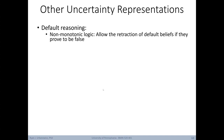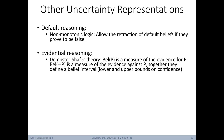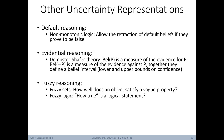There are other ways to represent uncertainty. Default reasoning uses non-monotonic logic that allows the retraction of default beliefs if they prove to be false. Evidential reasoning is exemplified by the Dempster-Shafer theory, where Bel(P) measures evidence for P, Bel(not P) measures evidence against P, and together they define a belief interval with upper and lower bounds of confidence. Then there's fuzzy reasoning, where a fuzzy set describes how well an object satisfies a vague property, and fuzzy logic asks how true a logical statement is. And lastly, Bayesian networks, which we'll cover in the uncertainty module later in this course.